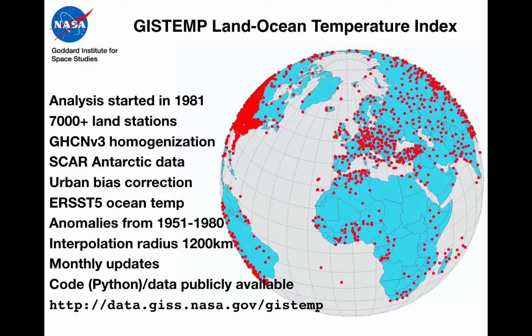The GISTEMP Land Ocean Temperature Index is an index designed primarily to estimate how the global temperature has been changing, and that analysis we started doing in 1981. Right now it uses around 7,000 land weather stations with the homogenisation from the GHCN effort at NOAA, with the addition of the SCAR Antarctic data and with an urban bias correction to deal with urban issues, particularly in crowded areas like the United States. We use ocean temperatures from the ERSST5 product and all changes are calculated with respect to a baseline of 1951 to 1980.